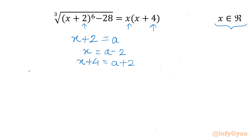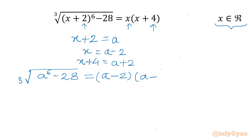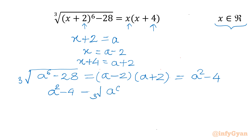Let's substitute. I will write cube root of (x plus 2), so it is a power 6 minus 28. This is LHS. RHS will be (a minus 2) times (a plus 2). From difference of two squares we can write a squared minus 4. Now I will take all terms to RHS, so I can write a squared minus 4 minus cube root of a power 6 minus 28 equal to 0.